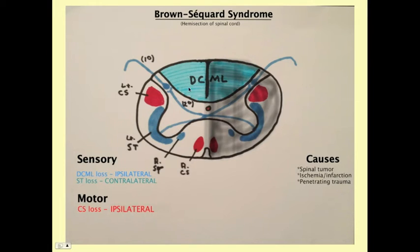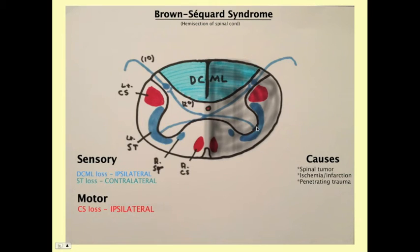With the spinothalamic tract, however, it's receiving information from the other side because it has already decussated. This results in a contralateral loss — the spinothalamic tract on one side receives information from the opposite side. So if you lose your left spinothalamic tract, you lose right-sided sensations of temperature, pressure, and pain.